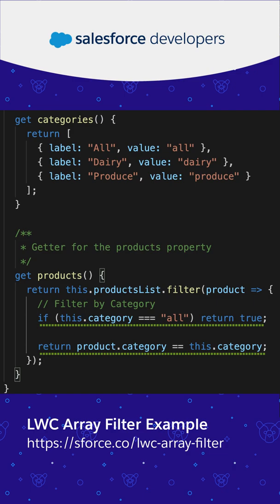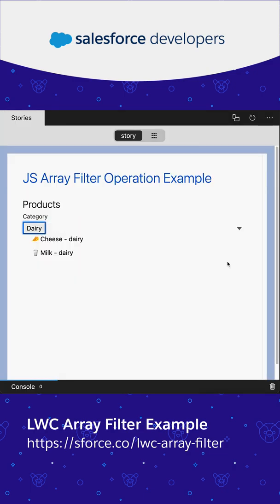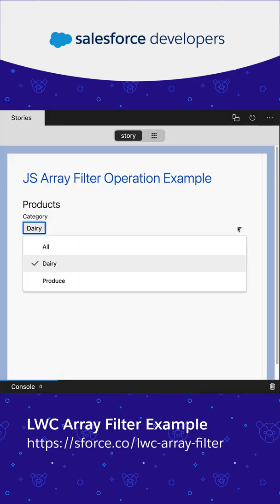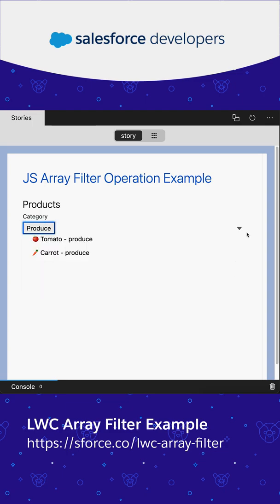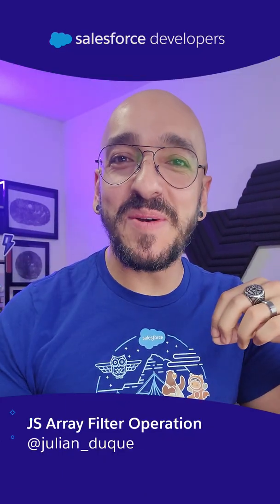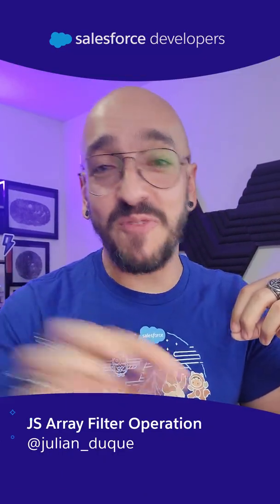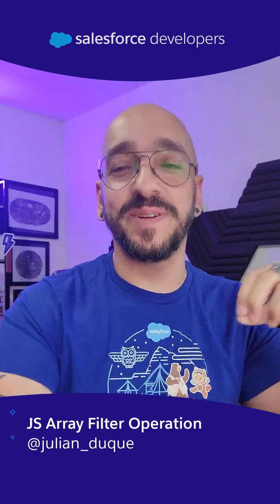This will return all the products in the list, and when we test by the specific category, it will return only those values. And that's how you do a JavaScript array filter operation.